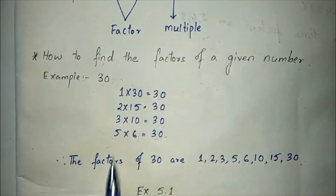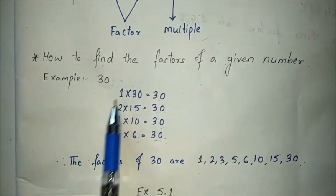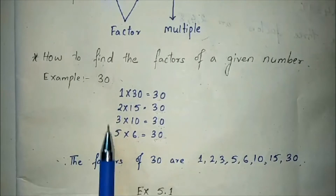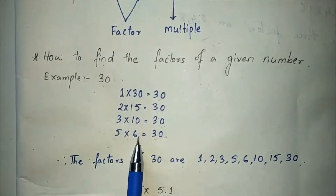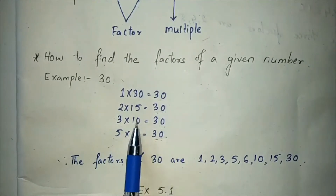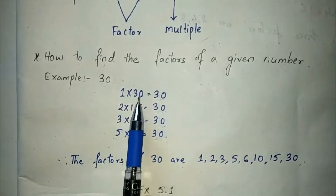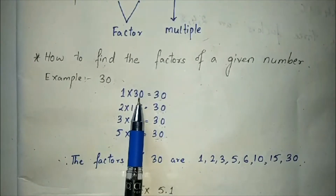So the factors of 30 are 1, 2, 3, 5, 6, 10, 15, and 30.